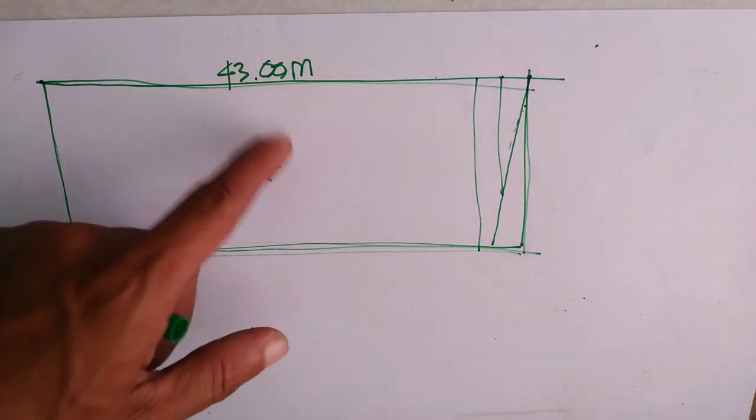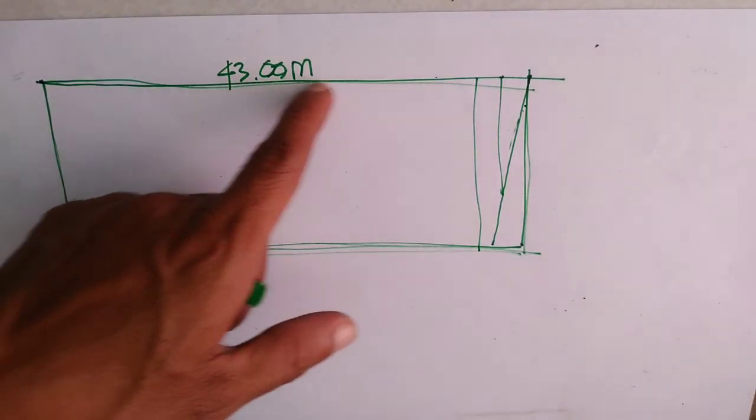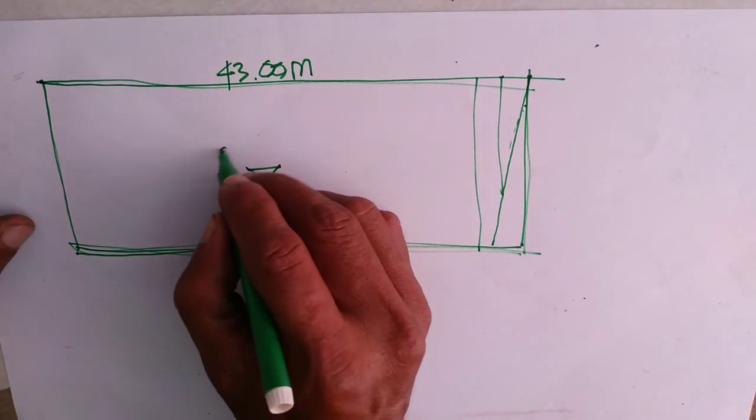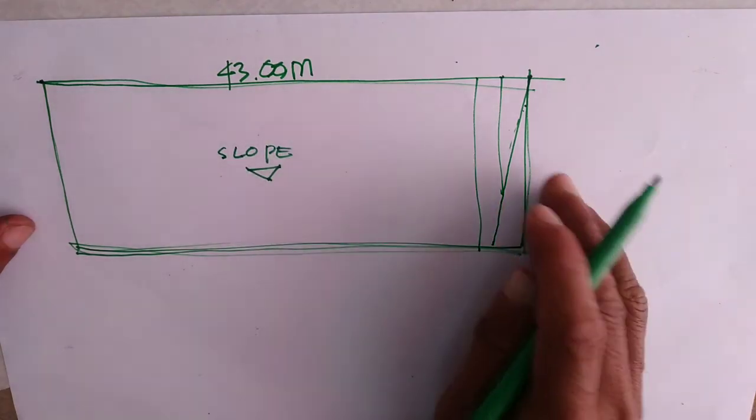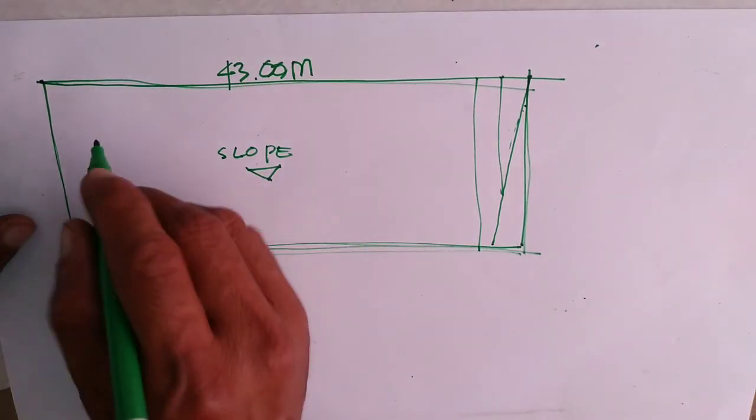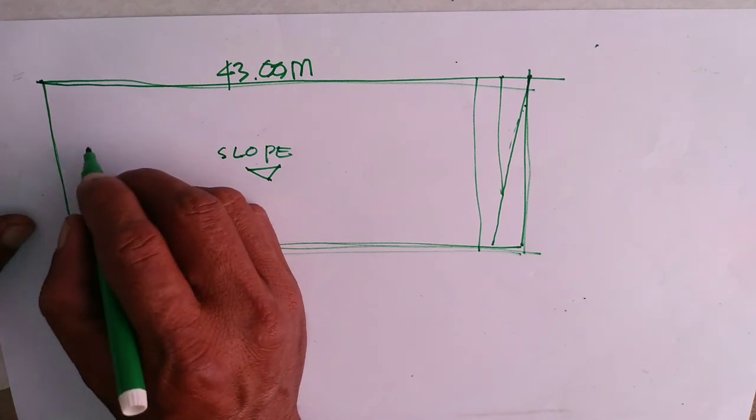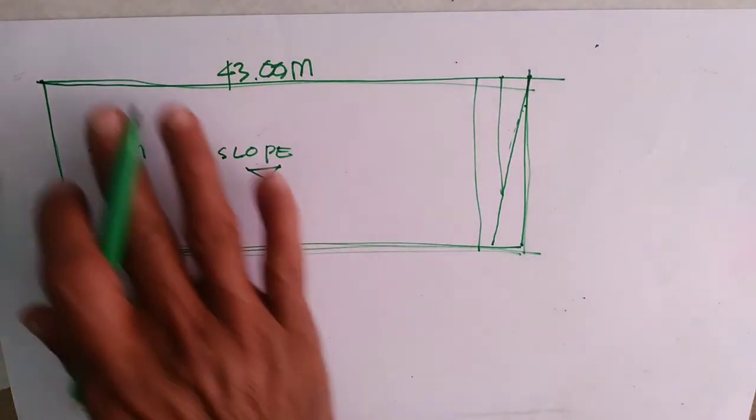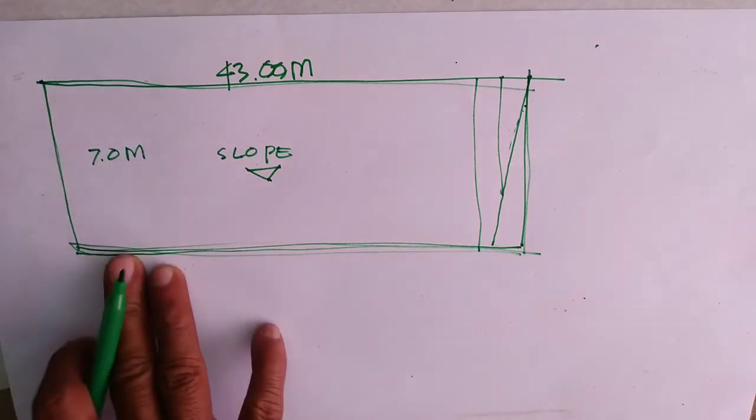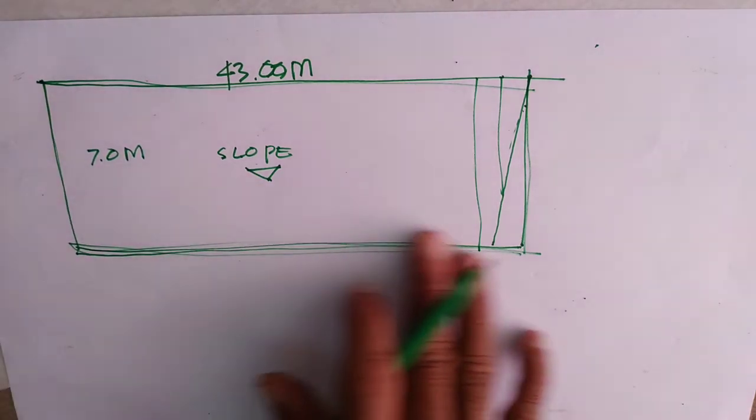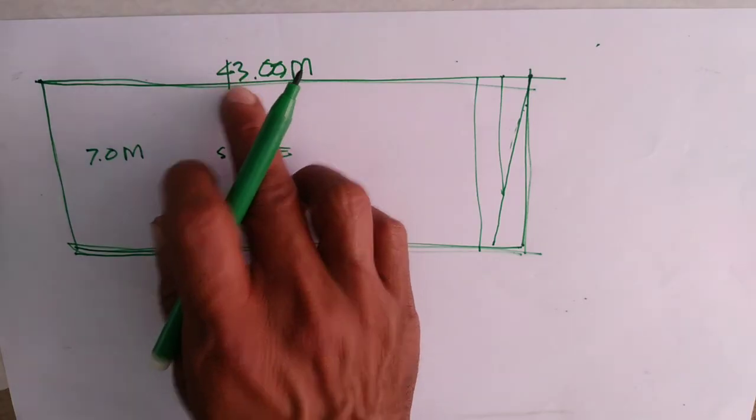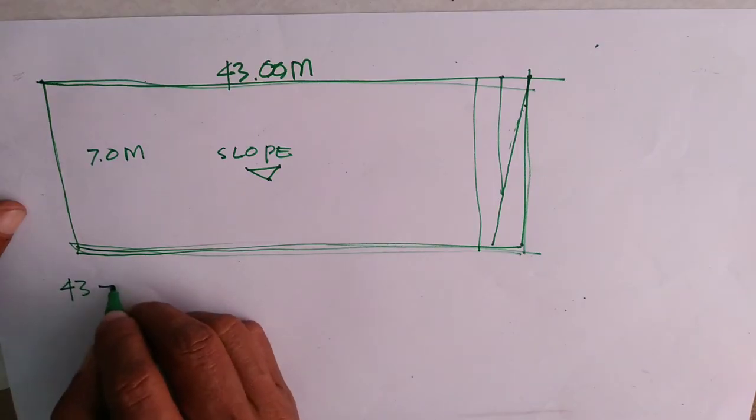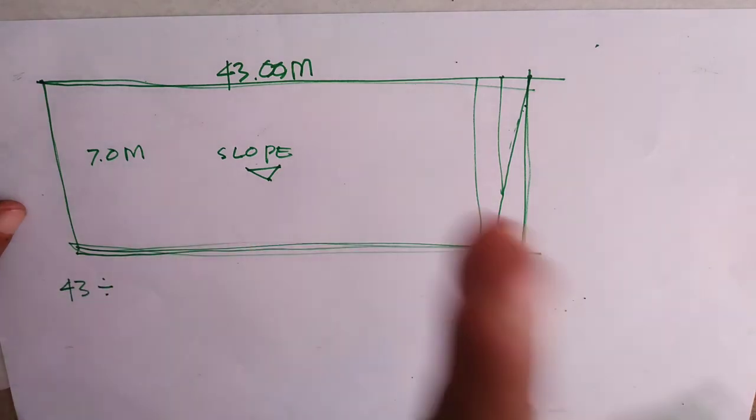So, ito yung sukat niya. Alimbawa, 43 meters. Yung lapad ng paglalagyan. So yung haba ng yero. Alimbawa, 7 meters. Exacto yun na natin. 7 meters. Yung pinaka-slope niya. Ngayon, itong 43 meters, divide mo lang po yan sa gagamitin mong yero.